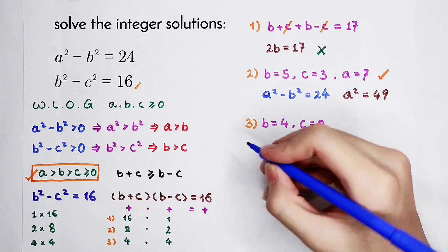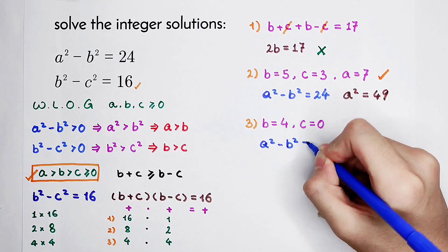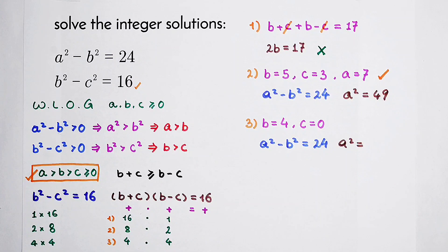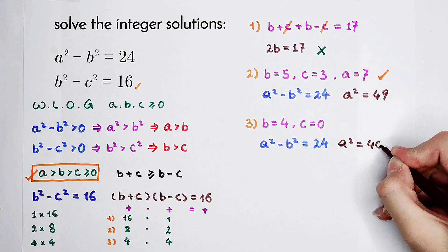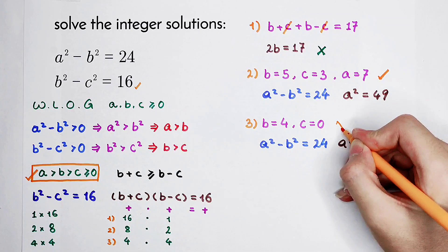We have to solve for a. A squared minus b squared equals 24. So a squared is 24 plus 16, which is 40. Since 40 is not a square number, there aren't any integer solutions.